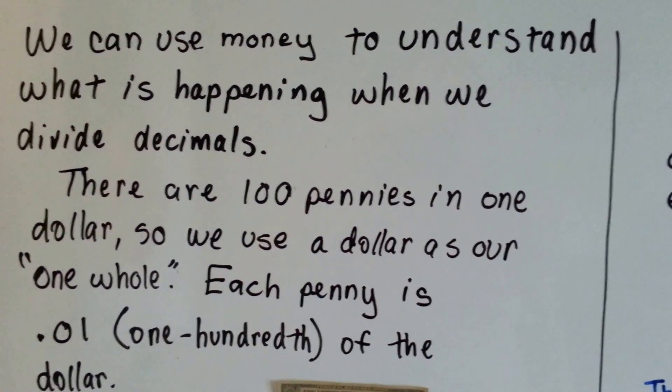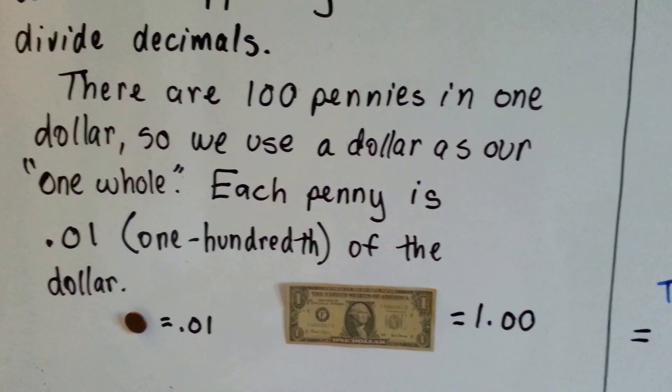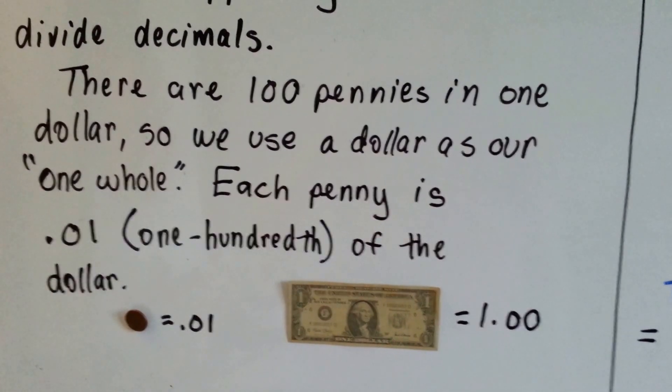We can use money to understand what is happening when we divide decimals. There are 100 pennies in one dollar, so we use a dollar as our one whole. Each penny is 0.01 (one-hundredth) of the dollar. You could use any money to do this as long as it's based on 100.